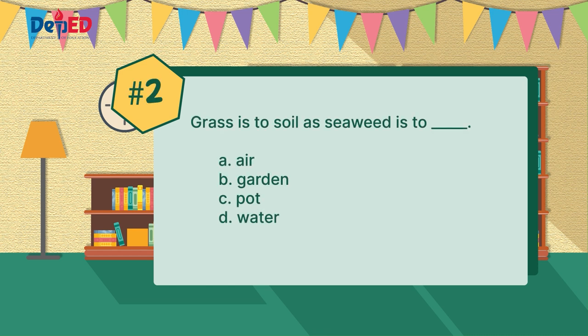For number two: grass is to soil as seaweed is to blank. Letter A: air. Letter B: garden. Letter C: pot. Letter D: water. Do you have letter D as your answer? You got it! The answer for number two is water.